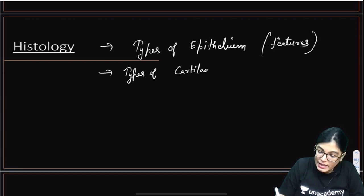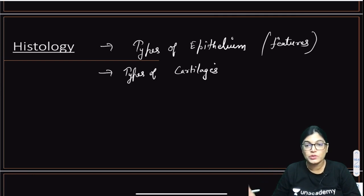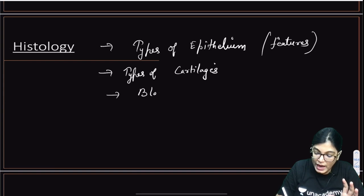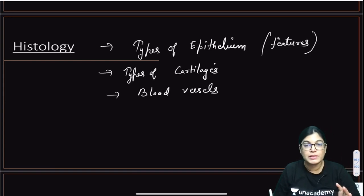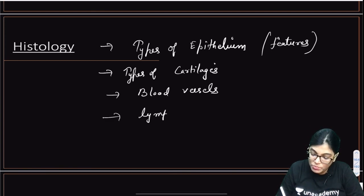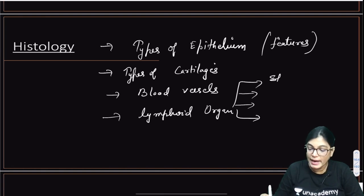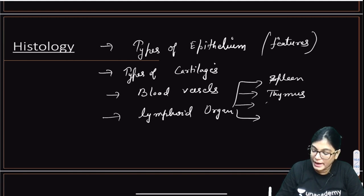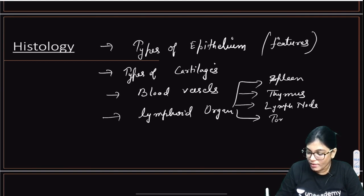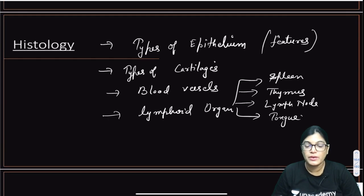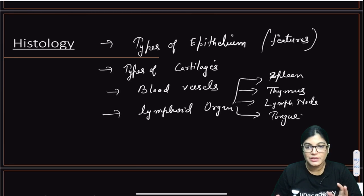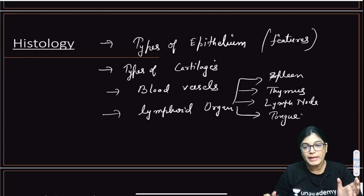You must know how to identify and differentiate cartilage slides. Also important: identification points of blood vessels — differences between elastic artery, muscular artery, and vein with collapsed lumen. Lymphoid organs are one of the most important topics in histology — four slides: spleen, thymus, lymph node, and tongue. You cannot leave any of these slides. Many free sessions on histology are available on Unacademy, and I will plan YouTube sessions too — just write in the comment box which topics you want.